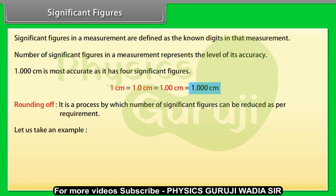Rounding off: It is a process by which number of significant figures can be reduced as per requirement. Let us take an example: L equals 2.6587 centimeters. On rounding off, L equals 2.659 centimeters.